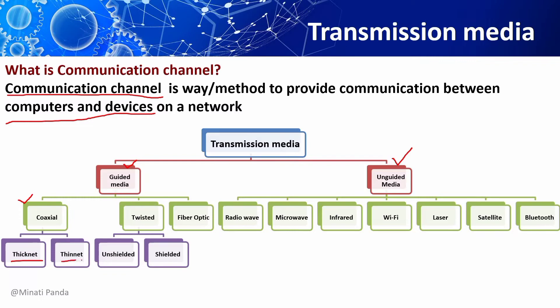Coaxial cable is further classified into thick net and thin net. The thick net coaxial cable can have a length of 500 meters and thin net will have 185 meters.